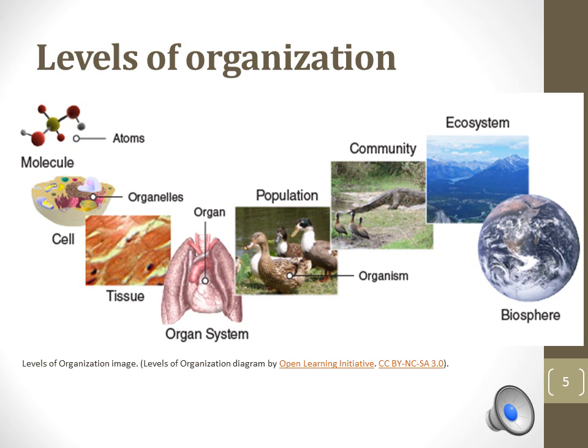An organism is a collection of organ systems that carry out the processes of life. Populations are groups of individuals of the same species that live in a similar area. Communities are all of the individuals of different species that live and interact with each other. And finally, an ecosystem is all of the biotic, living, and abiotic, non-living, things in an environment. And the biosphere includes all ecosystems found on Earth.